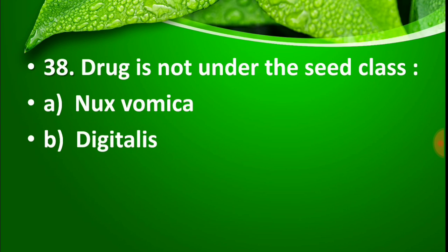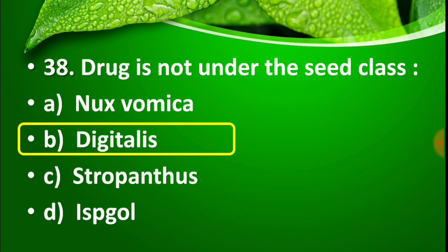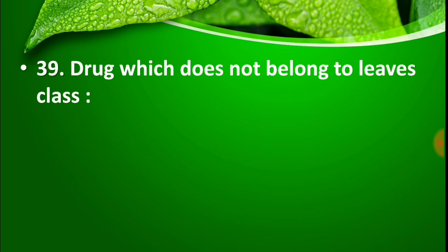Question number 38: Which drug is not under the seed class? Options: Option A: Nux vomica, Option B: Digitalis, Option C: Strophanthus, Option D: Isabgol. The right answer is Option B, Digitalis. Digitalis is mainly used for its leaf, not its seed. Nux vomica, Isabgol, and Strophanthus seeds are used, while Digitalis leaf is used. So Digitalis is not under the seed class.